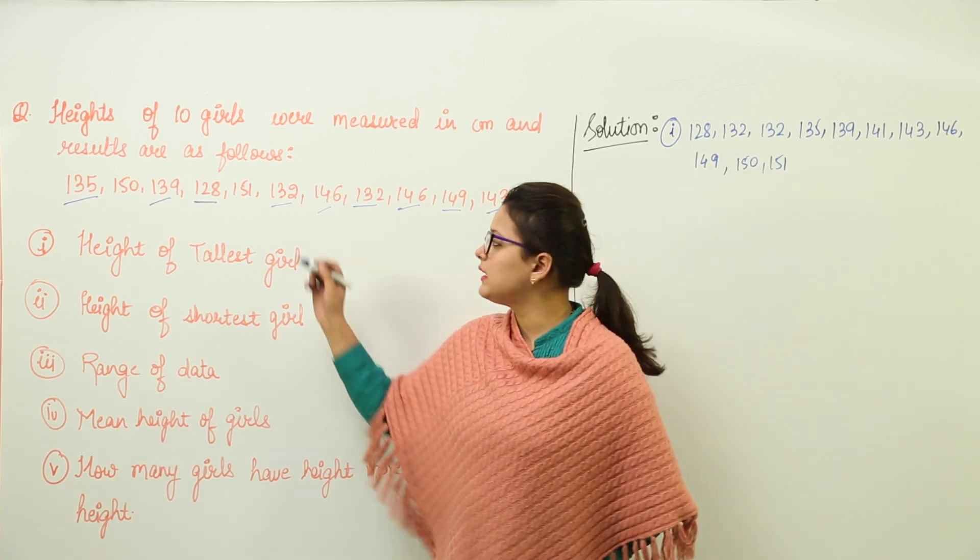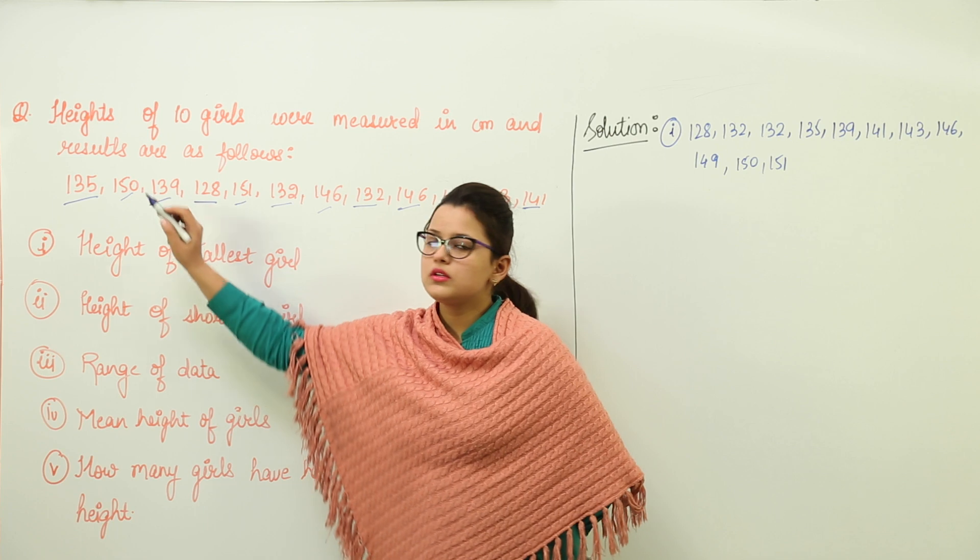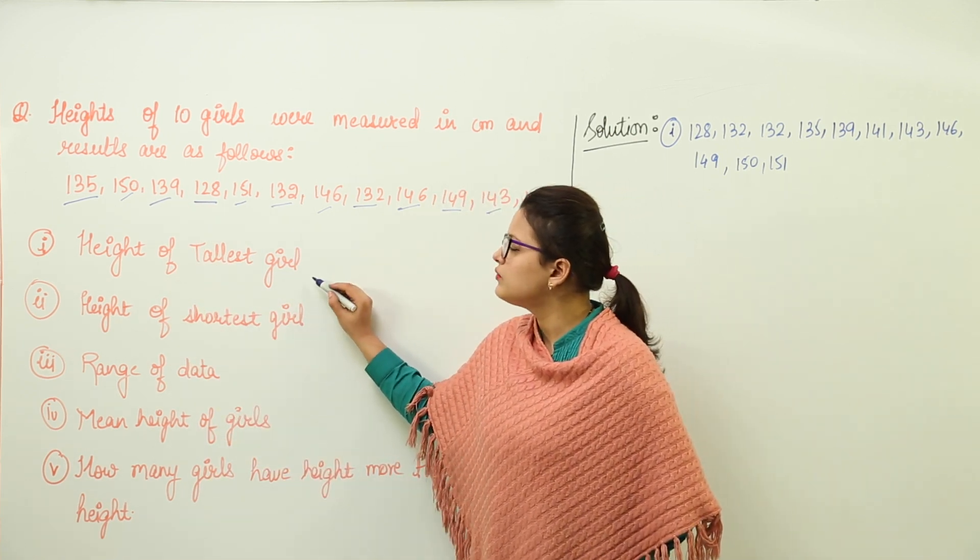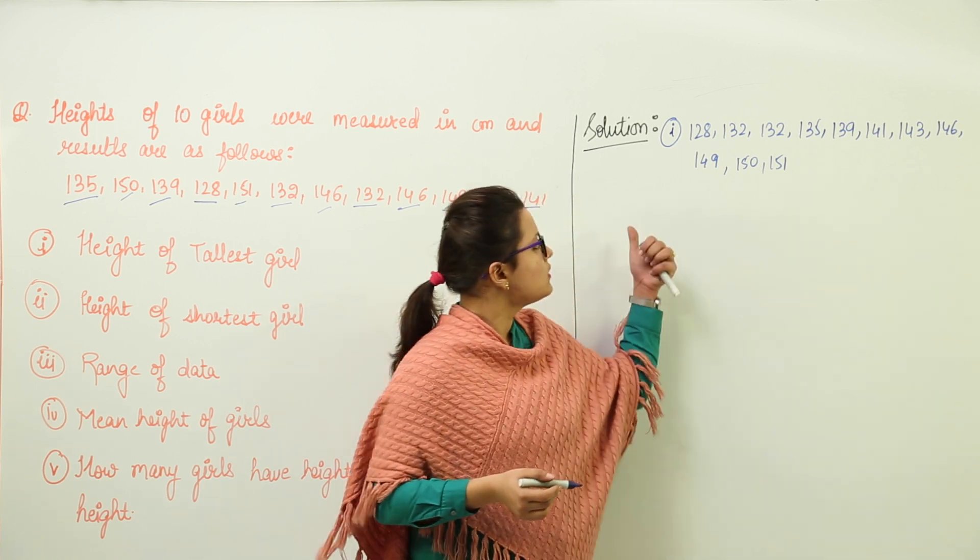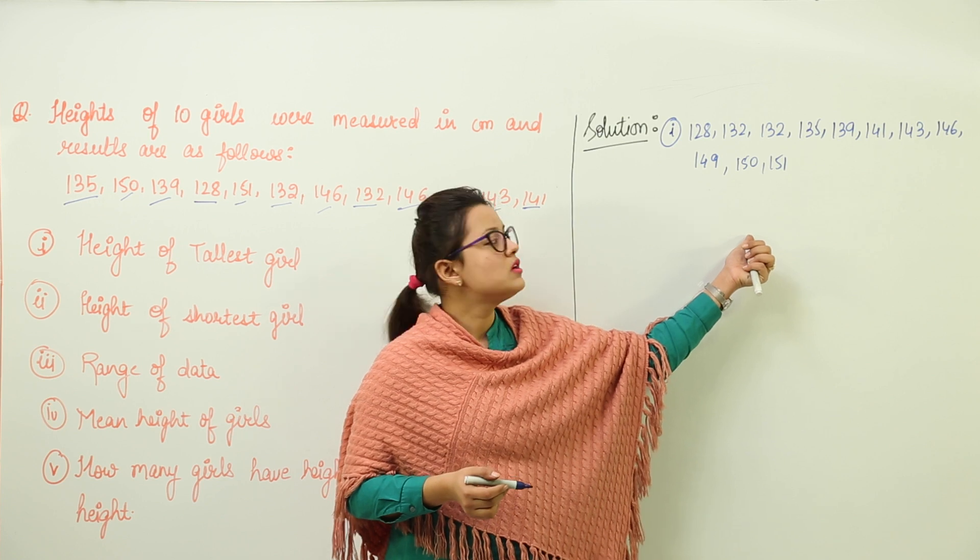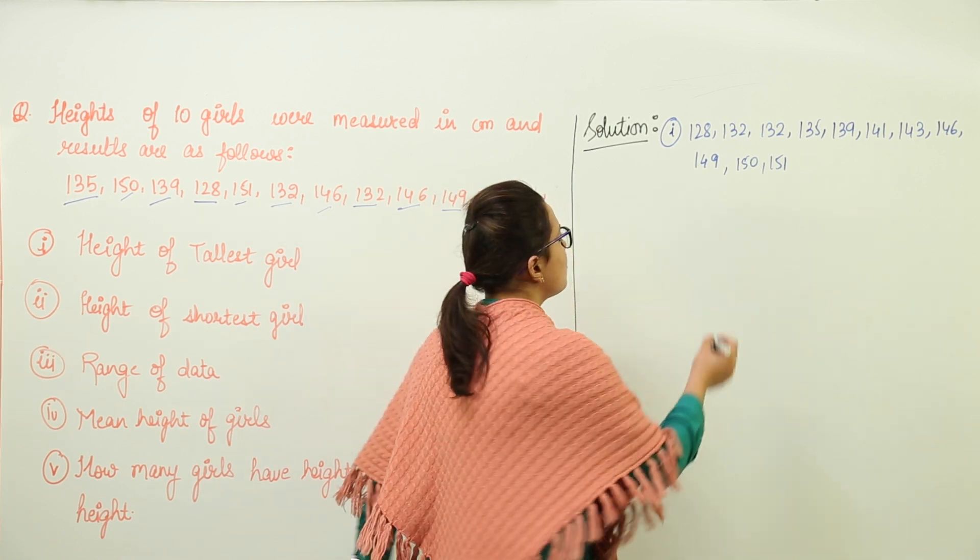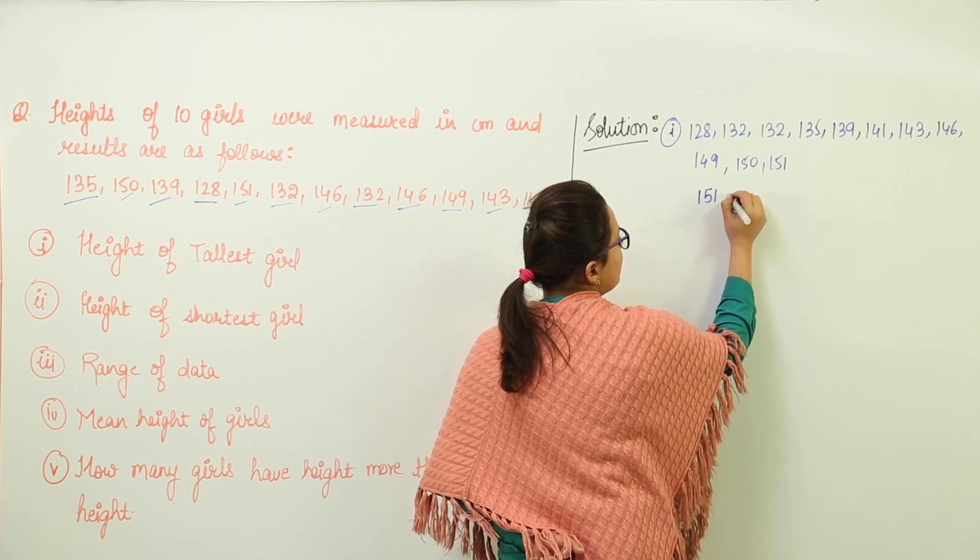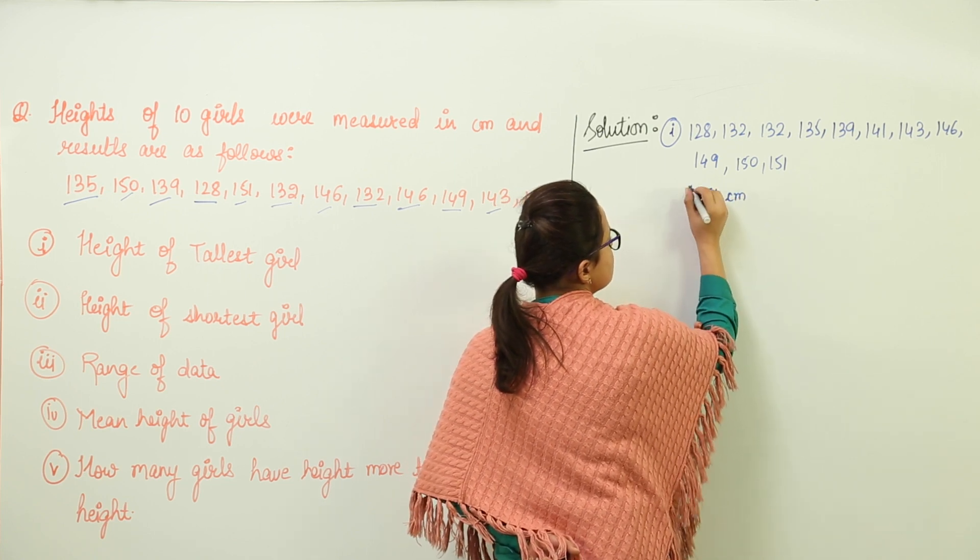So let us answer the first question - height of the tallest girl. Now you can see that the data has been written in increasing order, so the largest value is 151. So height of the tallest girl is 151 centimeters.